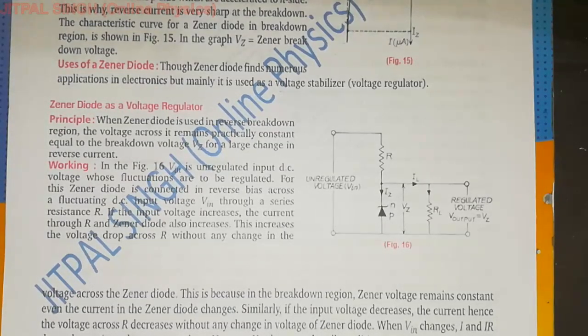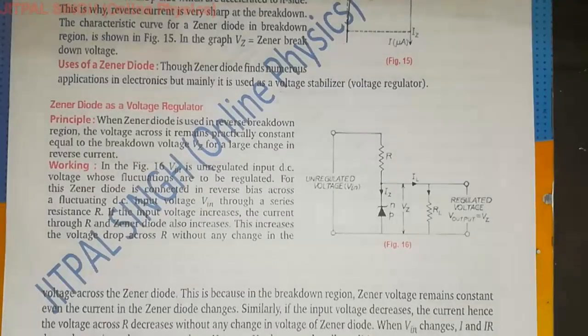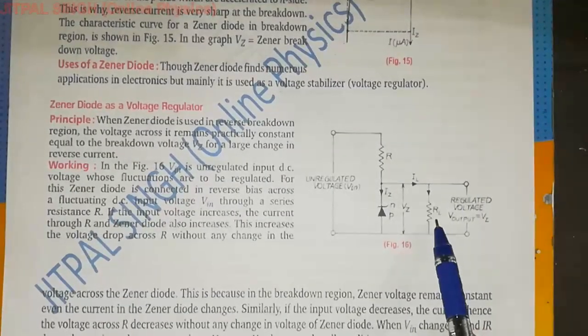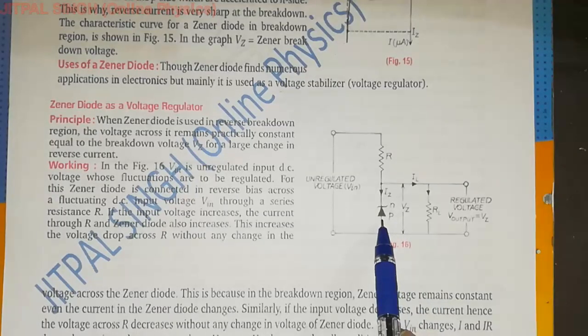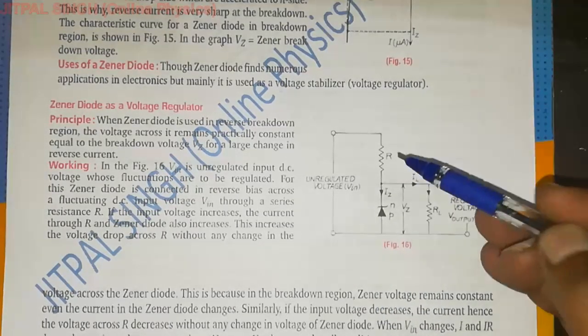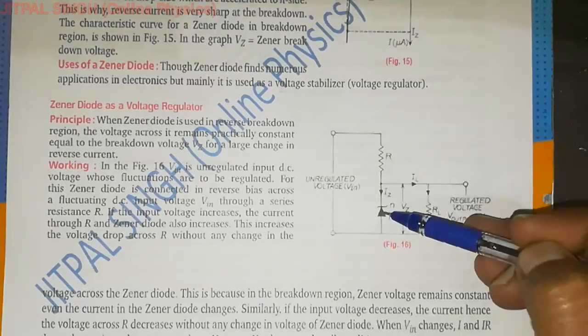Now, try to remember, it is a reverse biased PN junction diode. Circuit, how is it? Let's understand. Simple, just have a look. Now, here, if you observe this particular figure, PN junction diode, Zener diode, Zener diode resistance.